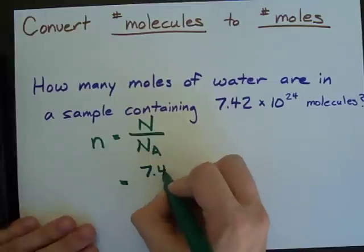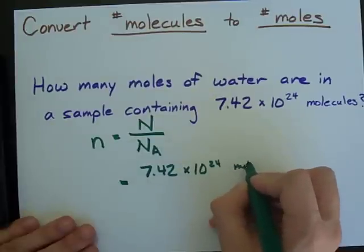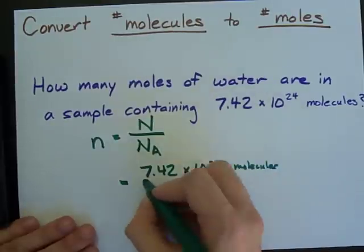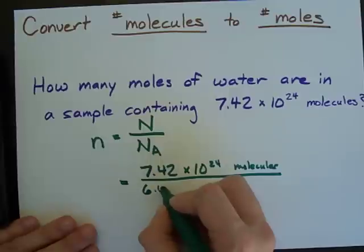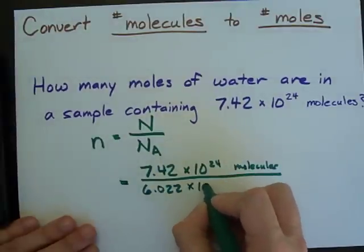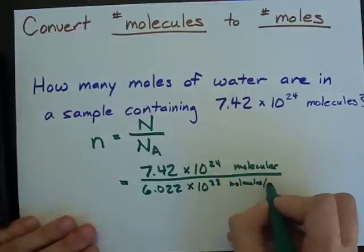Number of molecules, 7.42 times 10 to the 24 molecules. And I'm going to divide that by Avogadro's number, 6.022 times 10 to the 23. And the units there are molecules per mole.